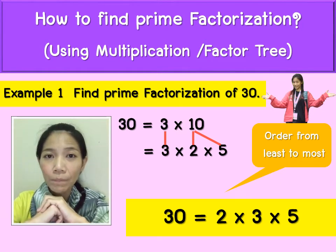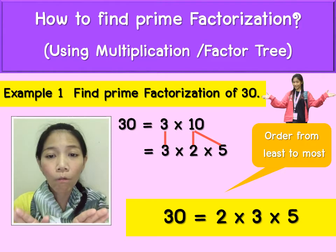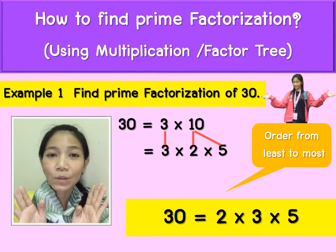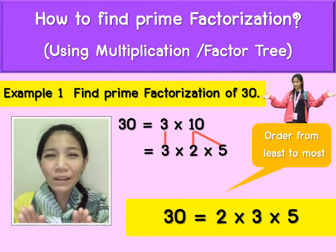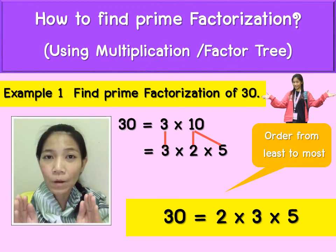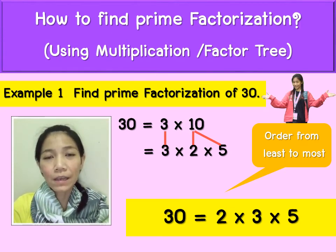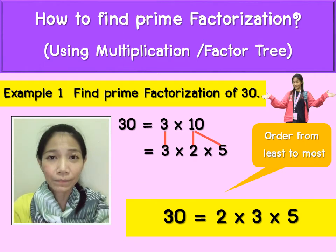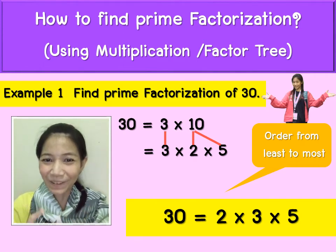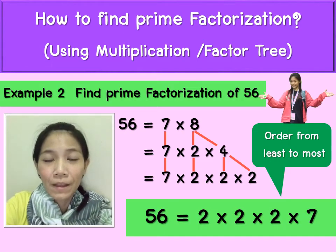3 and 5 — you can stop now because they are all prime numbers. When you write the answer, please write the numbers from least to greatest. So 30 equals 2 times 3 times 5. Easy, right?